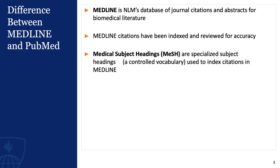People often ask: what's the difference between PubMed and Medline? We hear both terms so often it's easy to think they are one and the same, but actually they're not. Medline is a database of journal citations and abstracts for biomedical literature. Citations in Medline are reviewed for accuracy and indexed using specialized subject headings known as Controlled Vocabulary, or MeSH, which stands for Medical Subject Headings.